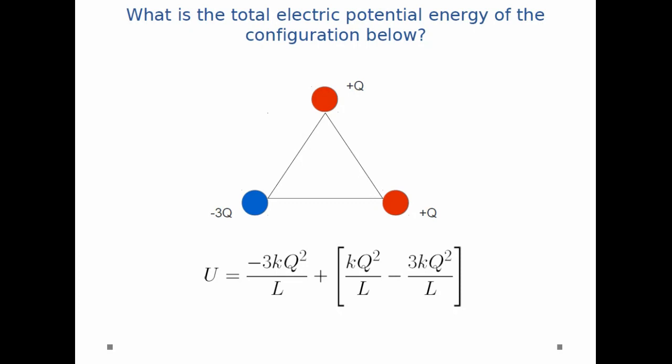And now I can just do a little bit of simplification, add those up, and I get minus 5kQ squared over L. And you'll notice that I can keep adding point charges onto this configuration, as many as I wish. And for every new point charge I add on, I just figure out what its energy is compared with each of the existing point charges in the configuration.